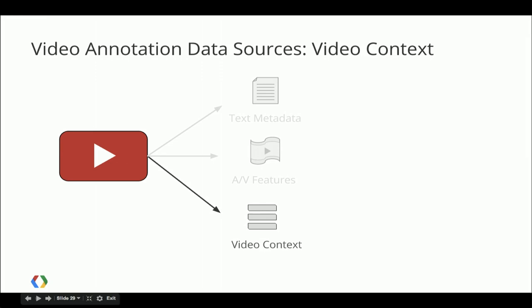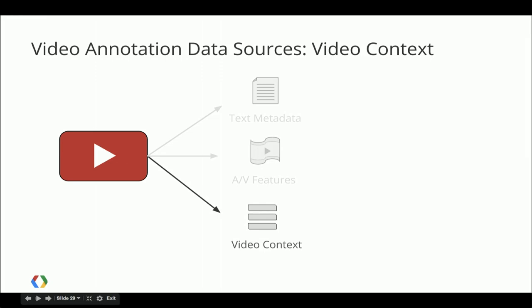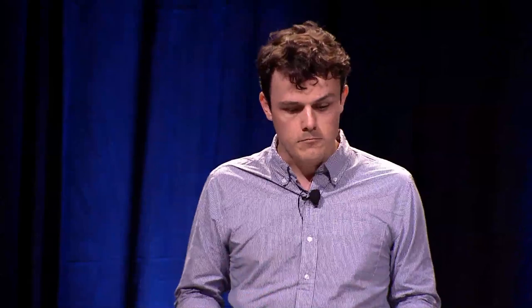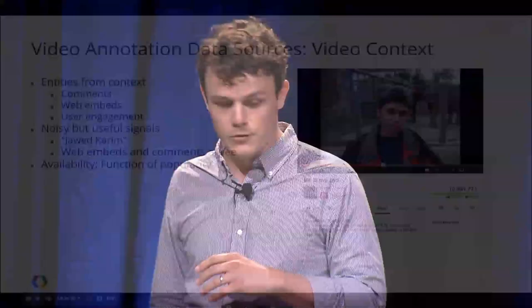Sometimes we don't even have audiovisual features to work with or no classifiers to match. In the case where we have a video that lacks both good metadata and distinct audiovisual features — like the video titled 'Me at the Zoo' — if we had a good classifier we might get Elephant and Man. That's about it. However, if we look at the context of the video — the discussions in the comments, the webpages it's embedded in, and the overall user engagement — we can figure out what is notable about this video: that it's notable because Jawed Karim is in it, he's one of the co-founders of YouTube, and this was the first video ever uploaded to YouTube.